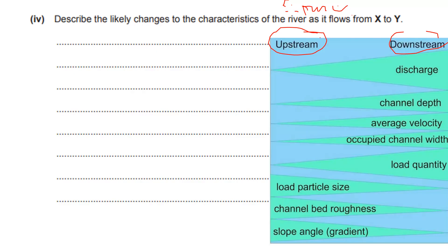Use the Bradshaw model to get your full answer. As you move from upstream to downstream: river discharge increases, channel depth increases, average velocity increases, width of the river increases, and quantity of load increases. However, load particle size decreases, becomes more smooth; channel bed roughness decreases; and gradient also decreases from steep to a gentle slope.